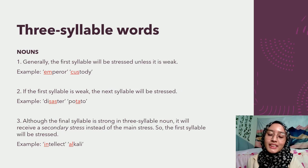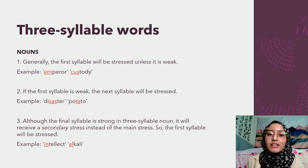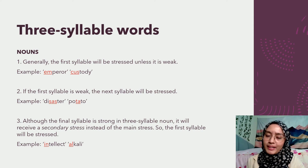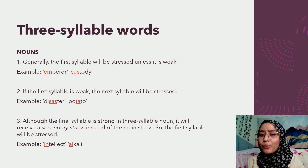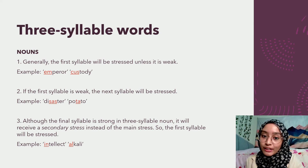For nouns, in general, the first syllable will always be stressed unless it is weak. For example, the word 'emperor', 'custody'. But what if the first syllable is weak? Well, we stress on the next syllable, which is the second syllable — 'disaster', 'potato'.